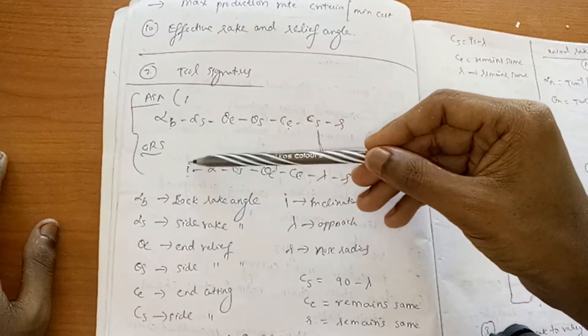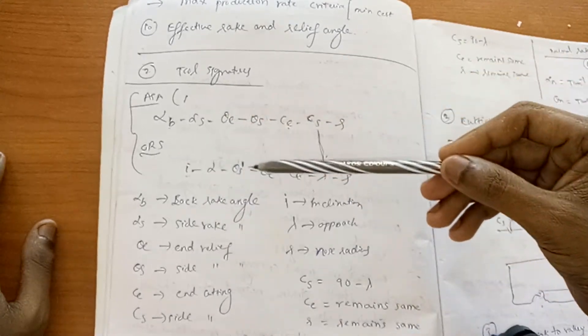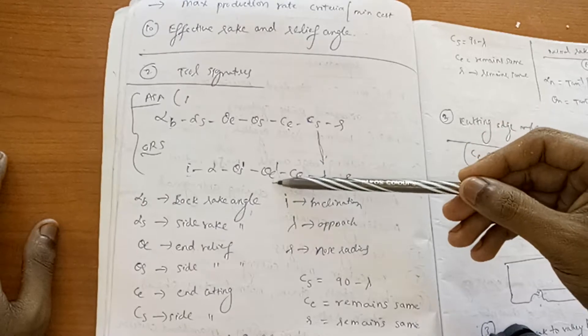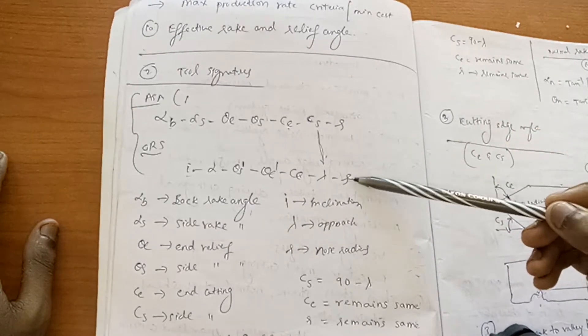Coming to ORS, first one is I means inclination, alpha means effective rake angle, side relief angle, end relief angle, end cutting edge angle, lambda means approach, R means nose radius.